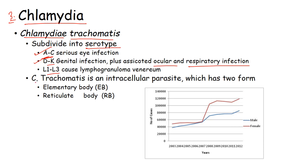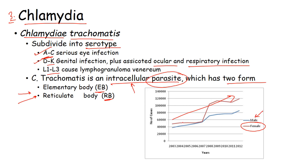Chlamydia trachomatis is an intracellular parasite with two forms: the elementary body (EB) and the reticulate body (RB). As shown in the picture, all sexually transmitted diseases have increased over time, and chlamydia infections are very common — more common in females than in males.